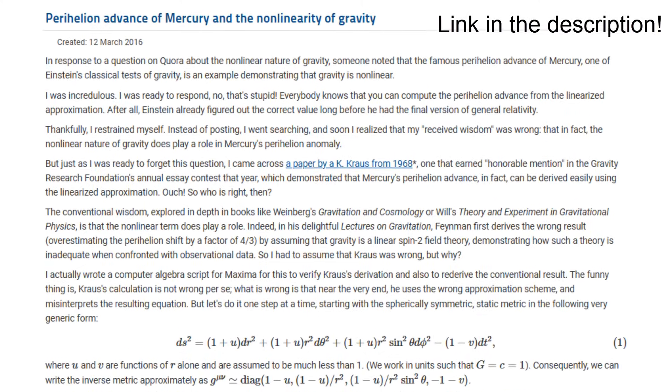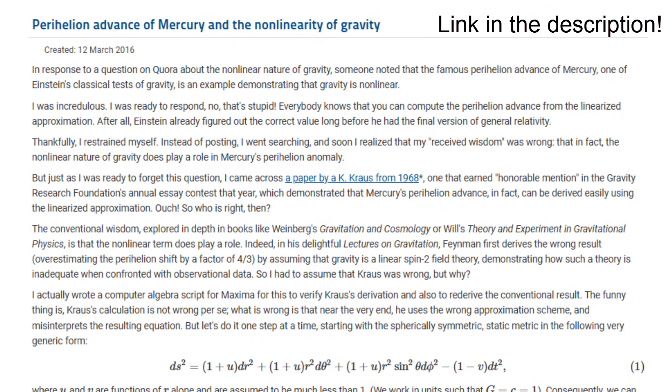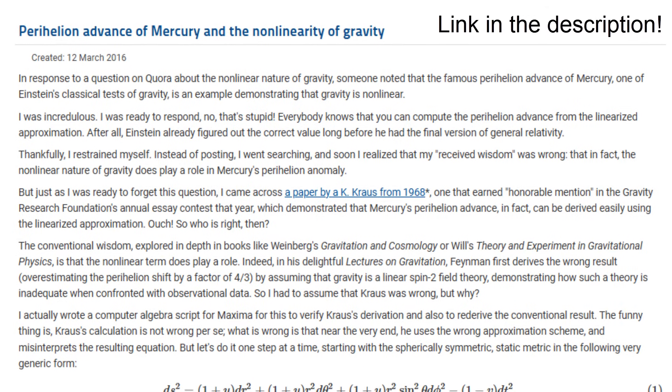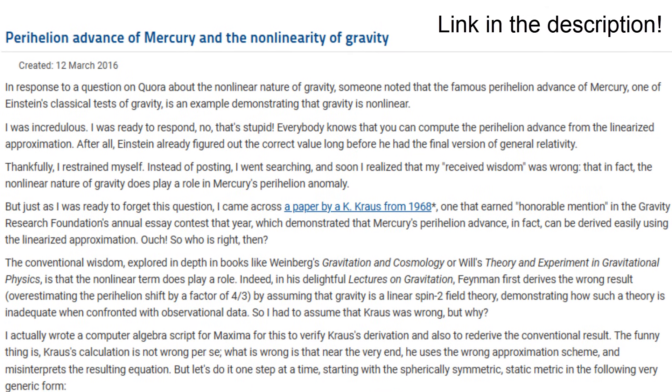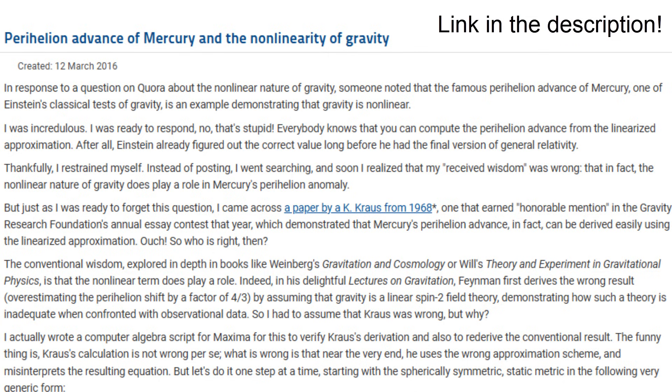In fact, as shown by Viktor Titov, one cannot simply explain Mercury's orbit with a linearized approximation to general relativity. Even though the gravitational potential near the Sun is far from what we consider strong gravity, which would require the gravitational potential to approach the orders of magnitude of the speed of light squared, non-linear effects already kick in here.